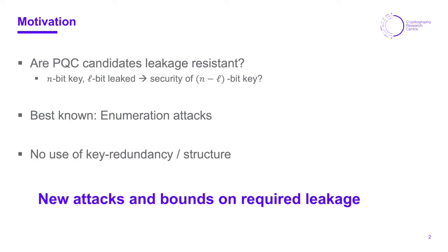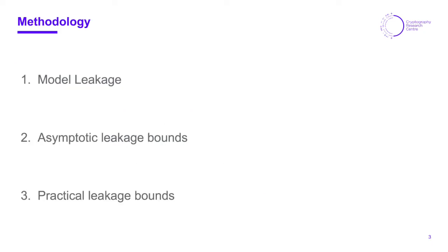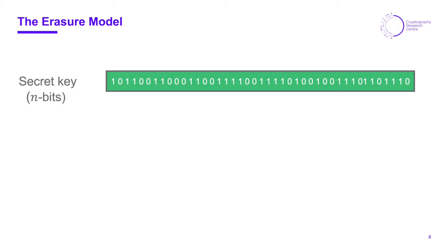Let me give a brief explanation of the methodology we used. First we model the leakage. From a theoretical point of view, how does the leakage that we obtain via some arbitrary side channel look like? We define two to three different models and let me introduce one of these models which we call the erasure model. We model the secret key as a chunk of n bits.